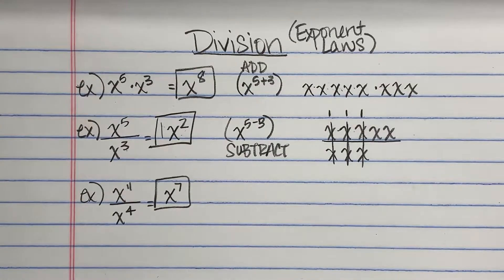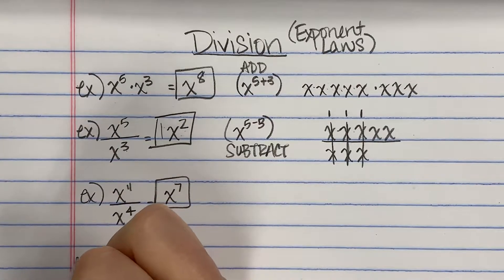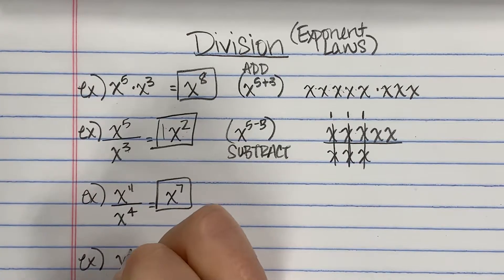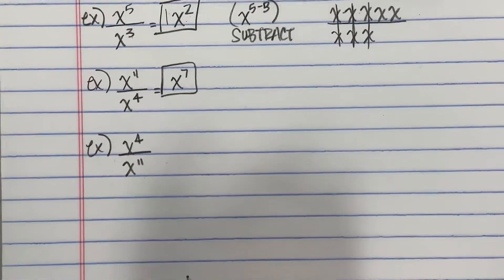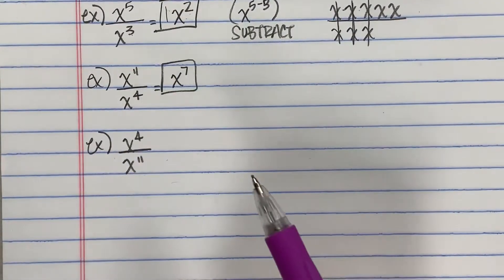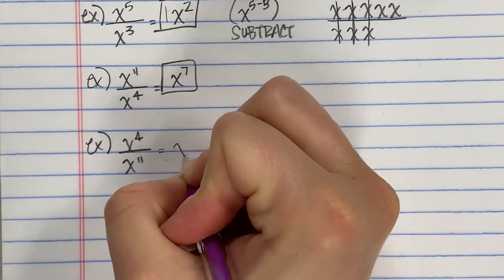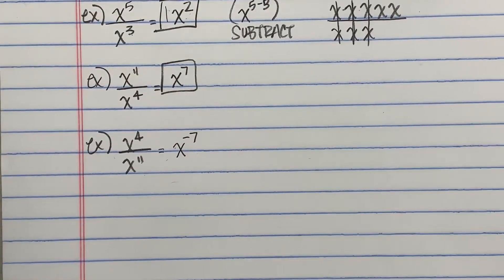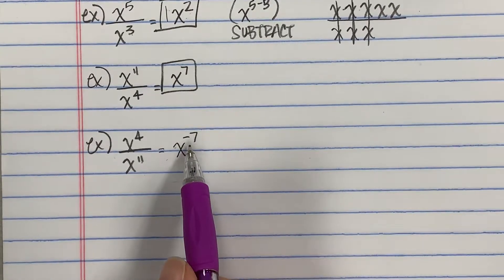Now I keep mentioning the fact that they end up in the top — let's look at why that's a big deal. If I switch it and say x to the 4th over x to the 11th, same exact problem but reversed. In this situation I would end up with 4 minus 11, which is negative 7. But one of our simplifying rules is that we're not allowed to leave a negative exponent, so there's got to be a different way to represent this value.